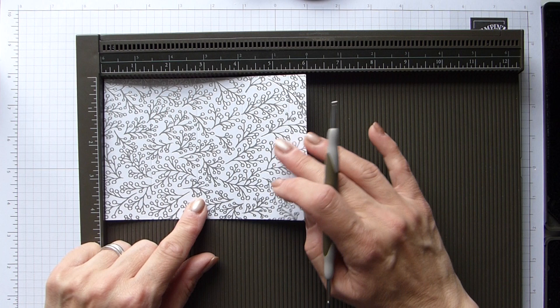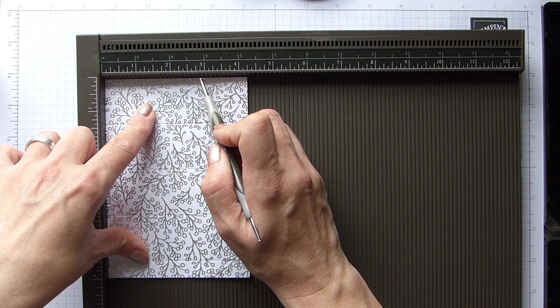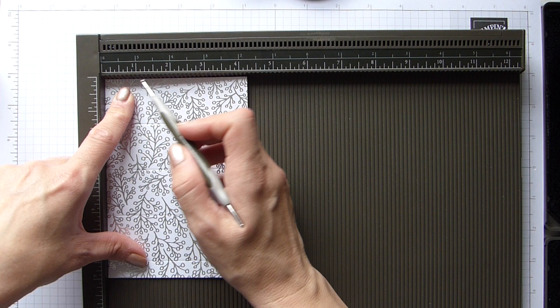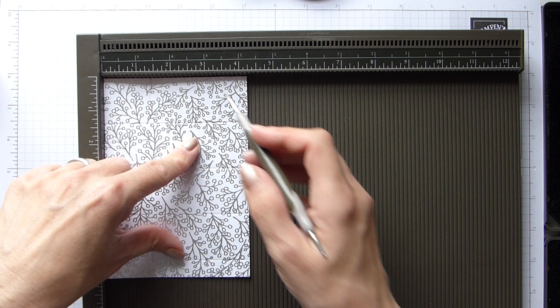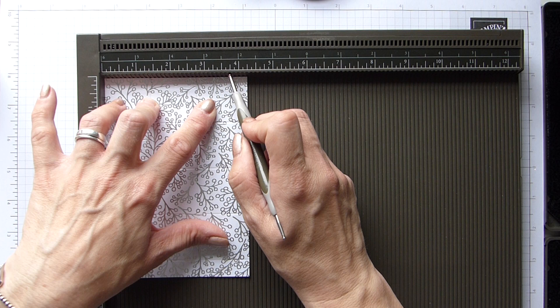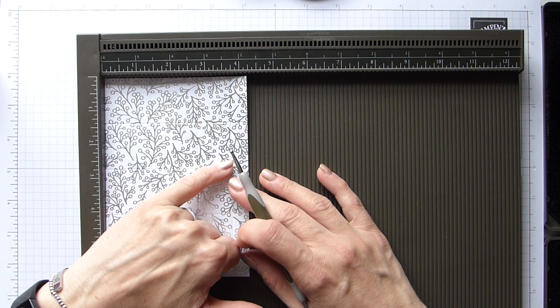I'm then going to rotate and score at 1.3.25 and 3.5, and in centimeters that will be 3.5, 7, and 9.5.